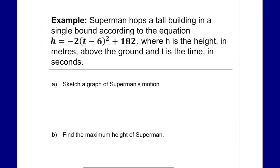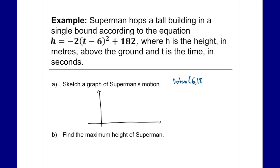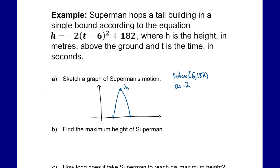One last example: Superman hops a tall building in a single bound, according to the equation h equals negative two times t minus six squared plus 182, where h is height in meters above the ground and t is time in seconds. Roughly sketching this, the vertex is at six and 182 from our h and k values. It opens down because a is negative two, and there is a stretch, so it looks like a skinnier downward parabola with vertex at six, 182.